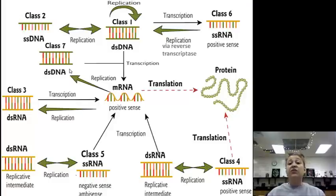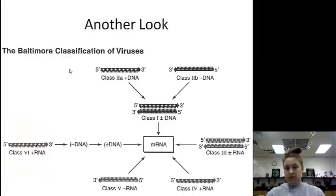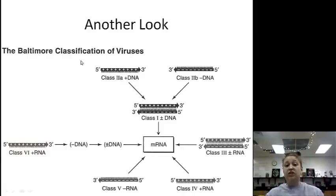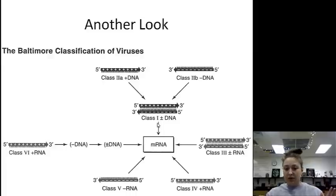So there are seven different classes that we've gone through. Let's look at it a different way — this is called the Baltimore Classification of Viruses. The Baltimore Classification uses the genome. Class 1 is double-stranded DNA: it's normal, it opens up, we use the negative strand to get the positive mRNA.